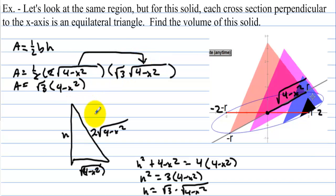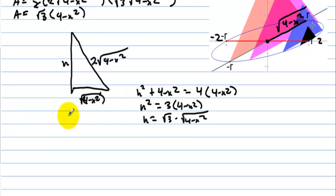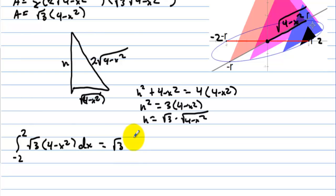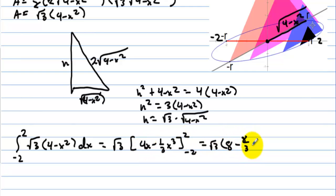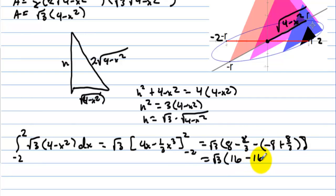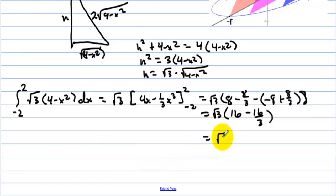Plugging in for h, the square roots cancel and the area simplifies to the square root of 3 times (4 minus x squared). We integrate this to get the third dimension — the integral from negative 2 to 2 of the square root of 3 times (4 minus x squared) dx. Pulling the square root of 3 out, we get: square root of 3 times [4x minus (1/3)x³] from negative 2 to 2. Evaluating gives square root of 3 times (8 minus 8/3) minus (negative 8 plus 8/3), which equals square root of 3 times 32/3.